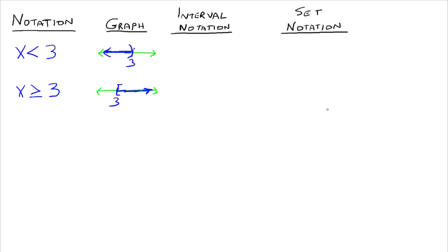To write interval notation, we look for the smallest number. Since the first example goes out forever towards negative infinity, we say negative infinity is the smallest number in our interval — even though you never actually reach infinity. Then we have a comma, and then the largest number in our interval, which is 3. Since 3 is not included, we put a parenthesis. Infinity — whether positive or negative — is never included, so it will always have a parenthesis.